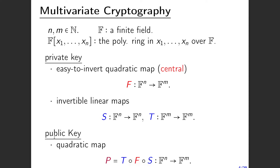Next I will show how to construct multivariate cryptography. We need a set of multivariate quadratic polynomials over a finite field. We define a finite field as F, and let n and m be two positive integers, and F[x1,...,xn] be the polynomial ring in x1 to xn over F. For its private key, we need three different maps: an easy-to-invert quadratic map, also called the central map, denoted by f; and two invertible linear maps, s and t. The public key is the composition of these three maps, giving public key p, which is a set of multivariate quadratic polynomials that are very difficult to solve.